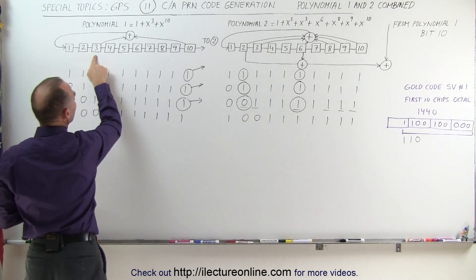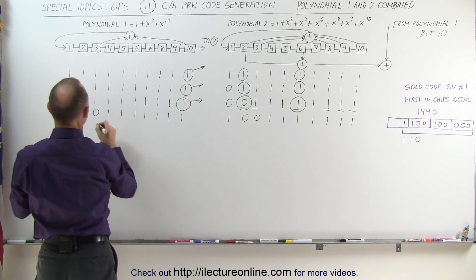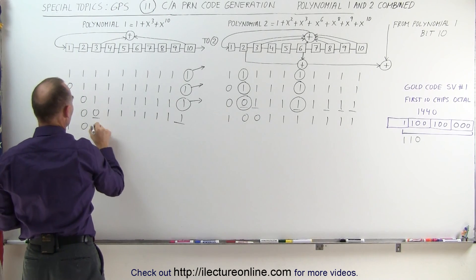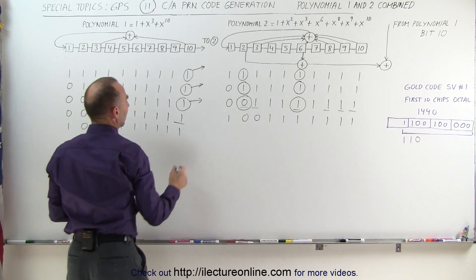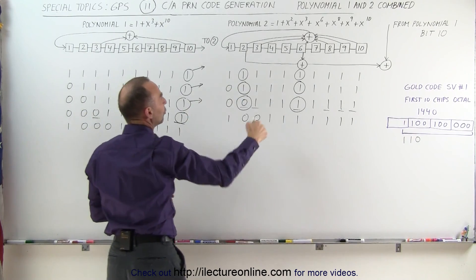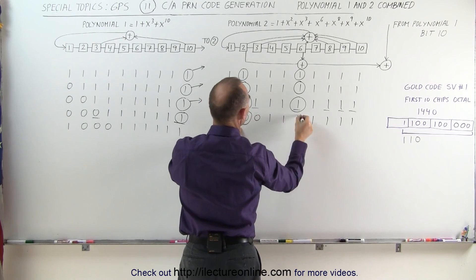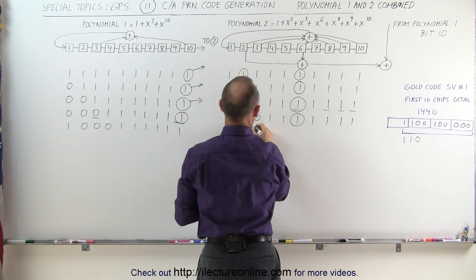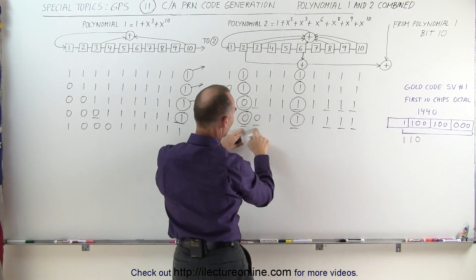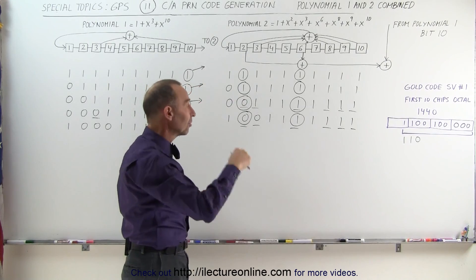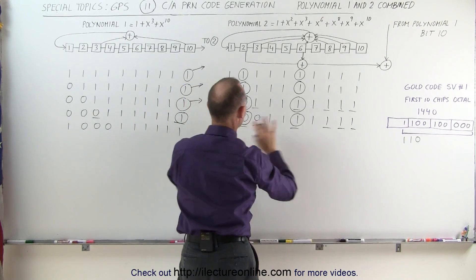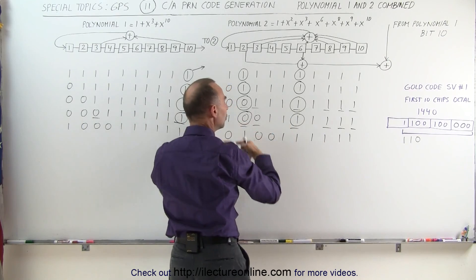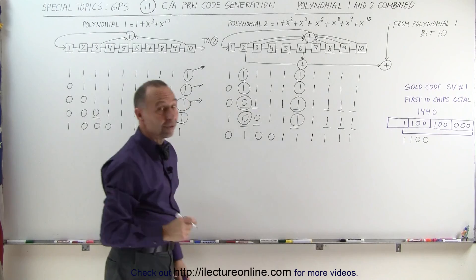Next step: we combine 3 and 10 — that's 0 and 1 — which adds up to 1. That gets fed into the first register, everything else shifts over, giving us 3 zeros and the rest 1s. We grab this value and add it to the sum of bits 2 and 6, and also add bits 2, 3, 6, 8, 9, and 10. We get 4 ones — an even number — so that becomes a 0, gets fed into the first bit position, everything else shifts over. We grab the 1, the 0, and the 1 — that becomes 2, which is even, so that becomes 0. So far, so good.